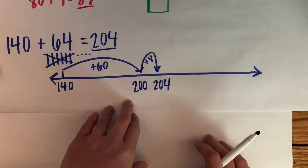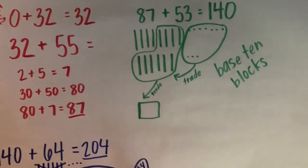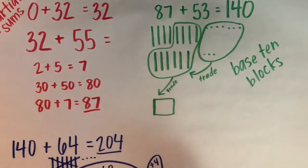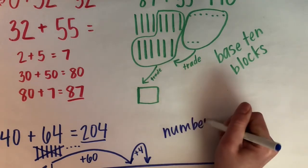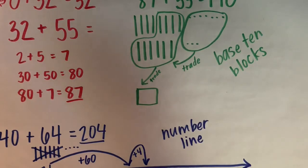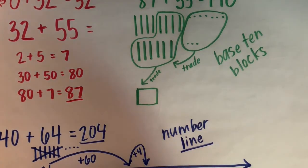And you keep on going until somebody gets to 1000. So you can use partial sums and base 10 blocks, or you can use a number line, whichever one you have been using in class and you're most comfortable with in order to solve addition problems. All right, have fun. Happy playing.